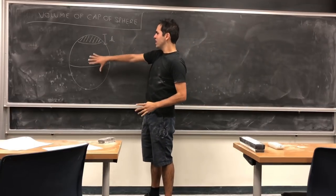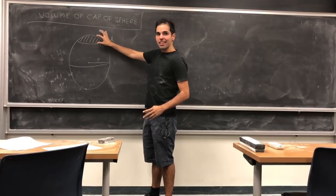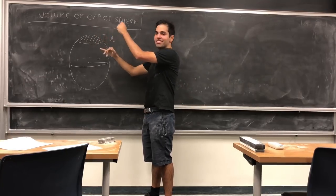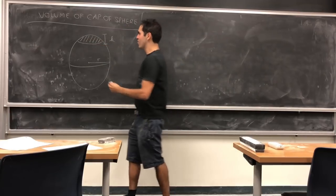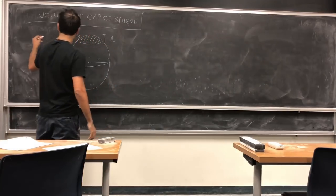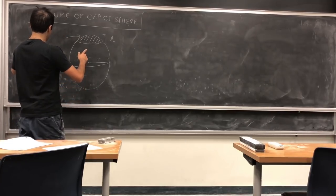Namely, suppose you have a ball of radius r and you have some cap on it, and we know that the cap has height h. The question is, what is the volume of this cap?